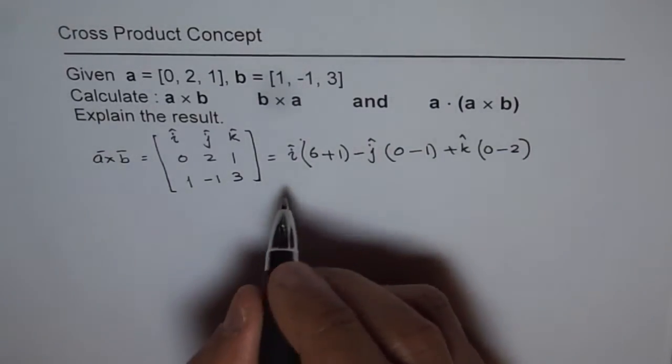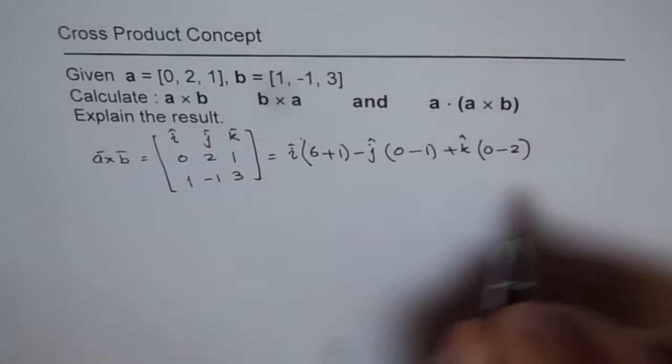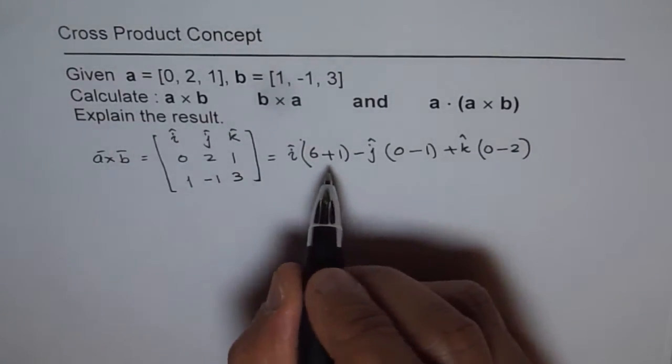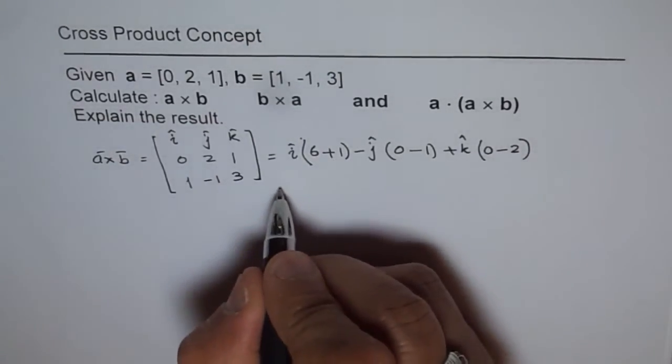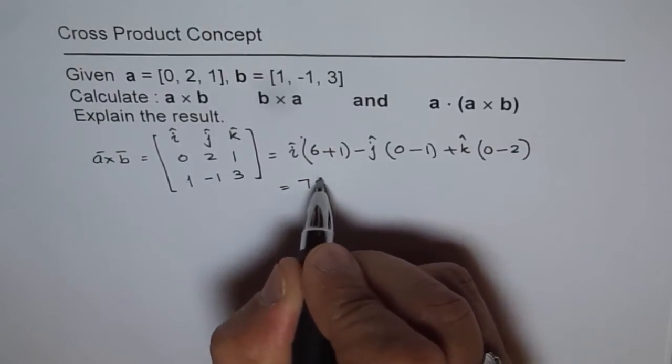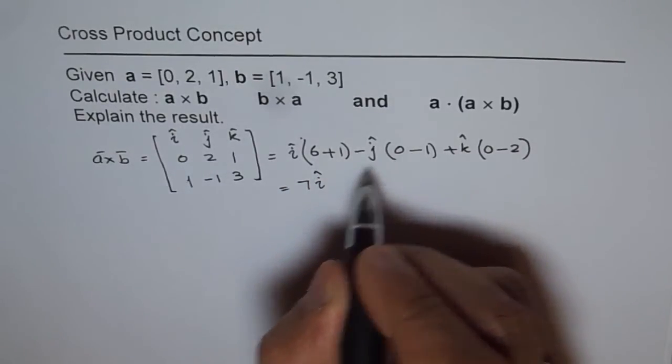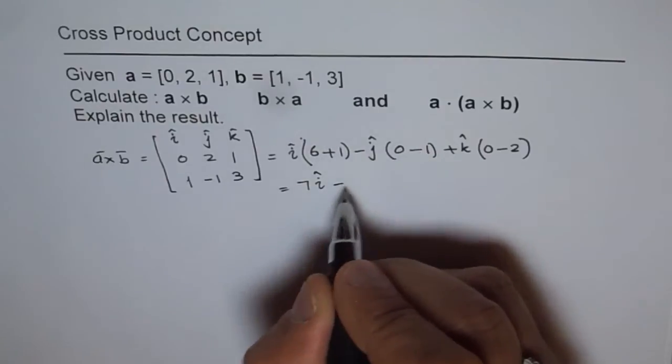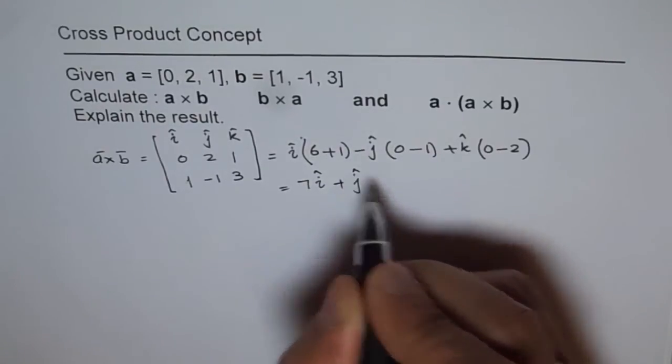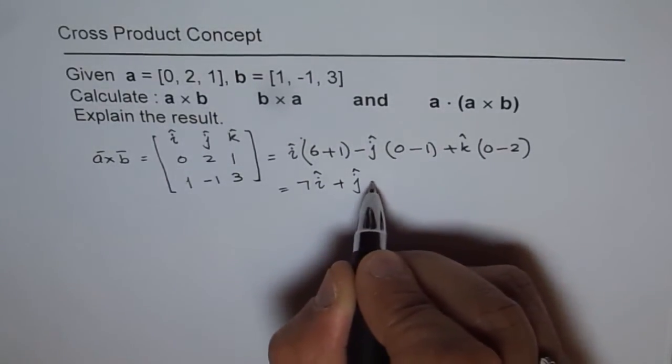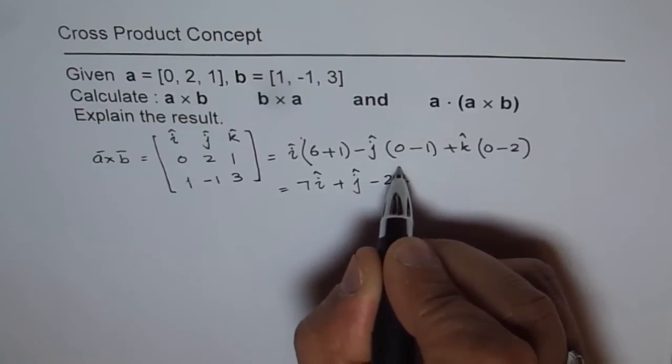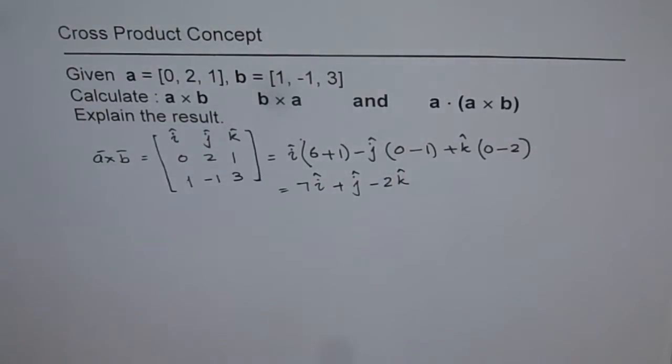So A cross B is equal to - we can write this as 7I minus and minus becomes plus J minus 2K. So this is vector A cross B.